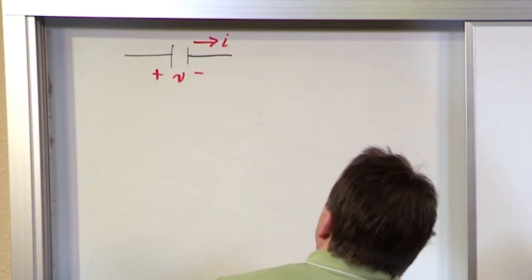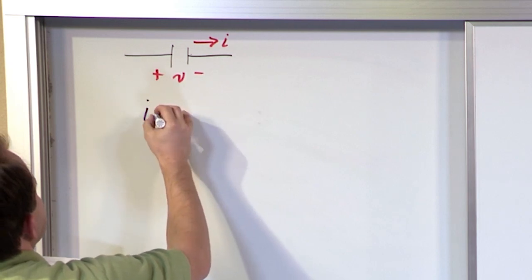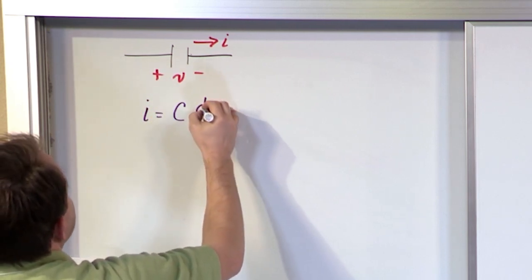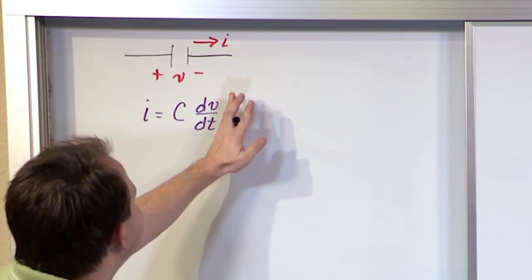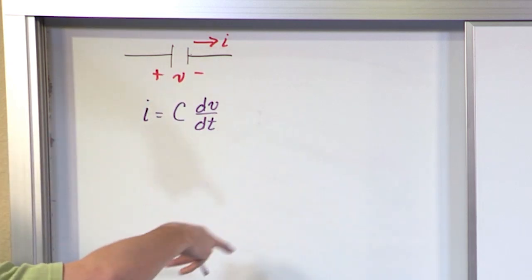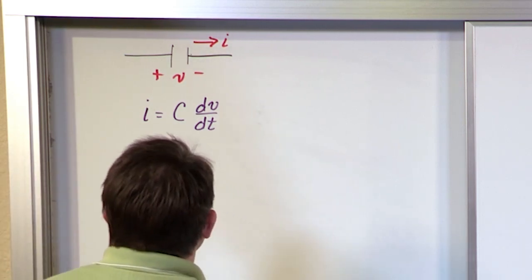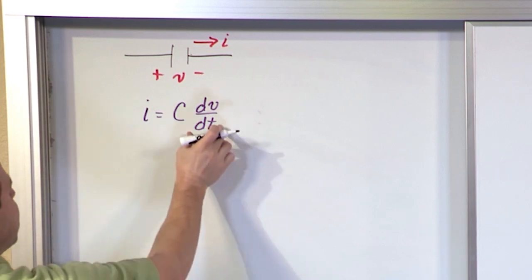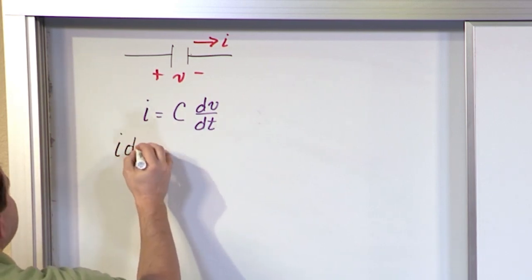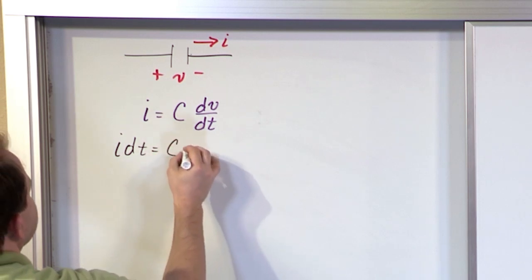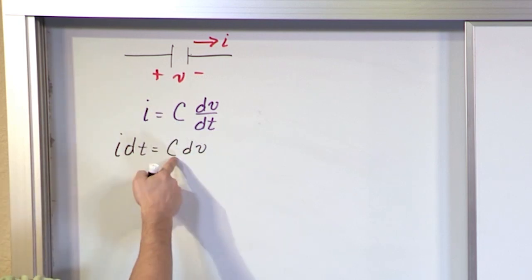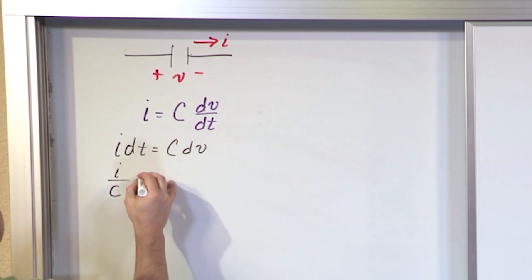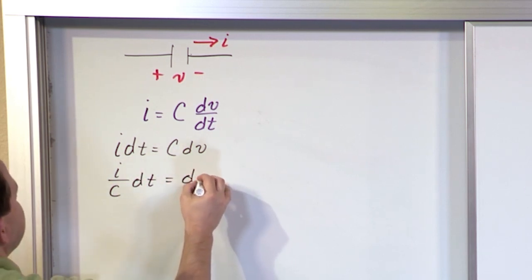Now we have already established in the last section that the current flowing through this capacitor is capacitance c times dv dt. So this is the current flowing through the capacitor if we know how the voltage is behaving. What we want to do is turn it around and solve for the voltage. So what we'll do is move this dt over, so i times dt equals c times dv. All right, and then we just move it as if it were a fraction, and then we divide by the capacitance, so i over c dt equals dv.